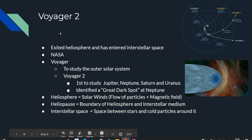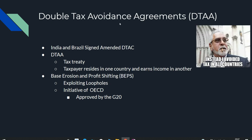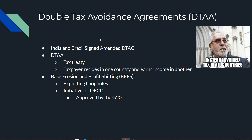Next: Double Tax Avoidance Agreements (DTAA). Recently, India and Brazil signed the amended DTAC — Double Tax Avoidance Convention. DTAA is a tax treaty stating that a taxpayer residing in one country and earning income in another should not pay taxes in both countries. Related to this is BEPS — Base Erosion and Profit Shifting — an initiative of OECD approved by the G20, which aims to reduce exploiting tax loopholes.